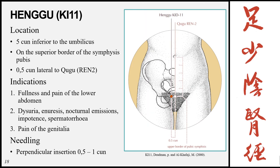Henggu, Kidney 11, is located 5 cun inferior to the umbilicus — the distance from the umbilicus to the pubic symphysis is 5 cun — so this point lies just superior to the upper border of the pubic symphysis, 0.5 cun lateral to Qugu (Ren 2) or the midline. Indications: fullness and pain of the lower abdomen, dysuria, enuresis, nocturnal emissions, impotence, spermaturia, and pain of the genitalia. Needling: perpendicular 0.5 to 1 cun.